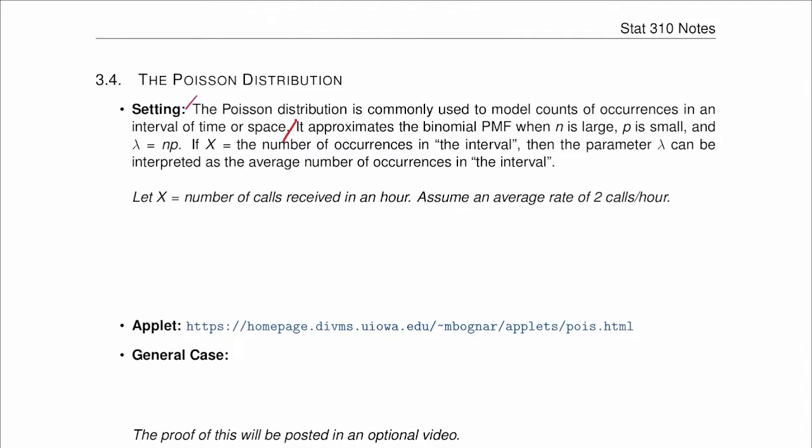It approximates, this is the definition, the binomial PMF when n is large, p is small, and lambda equals np. This lambda over here is the parameter of this distribution, the number that defines the behavior of the distribution.